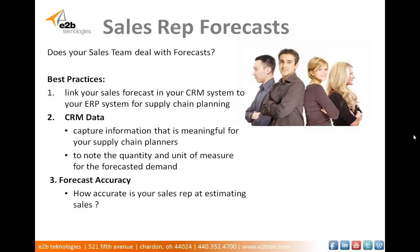Forecast accuracy — some sales reps are exceptional at forecasting, but others aren't quite so good. Analyze previous forecast accuracy by sales reps by item to determine how accurate their forecasts are. As a planner, you can then make the necessary adjustments for your supply chain forecasts. For example, if Sally Smith is 80% accurate and is usually on the low end of her forecast in respect to quantity and always a month early on when her sales will actually occur, you can easily adjust her forecast down by 20% and then move them out a month. This isn't a perfect scenario, but forecasting is never perfect, and this approach may be your best option.